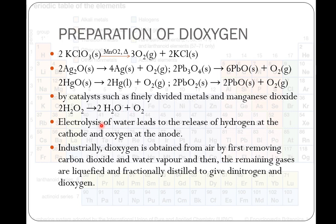On large scale, it can be prepared by the electrolysis of water. Industrially, Dioxygen is obtained from air by first removing carbon dioxide and water vapors, and then the remaining gases are liquefied and fractionally distilled to give dinitrogen and dioxygen.